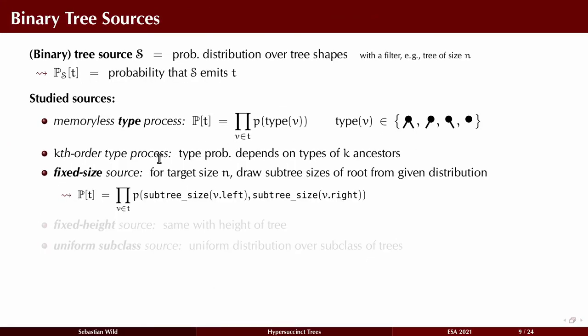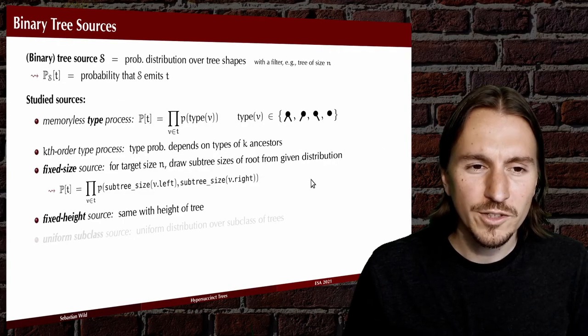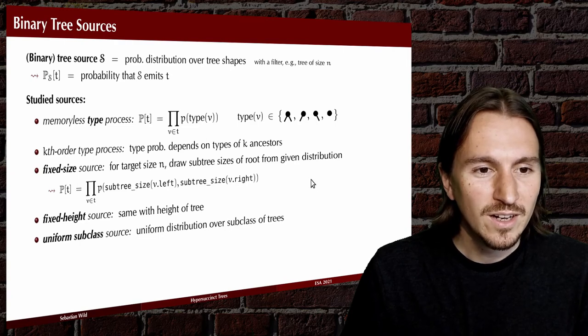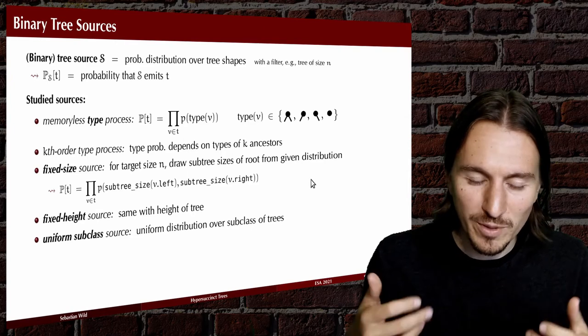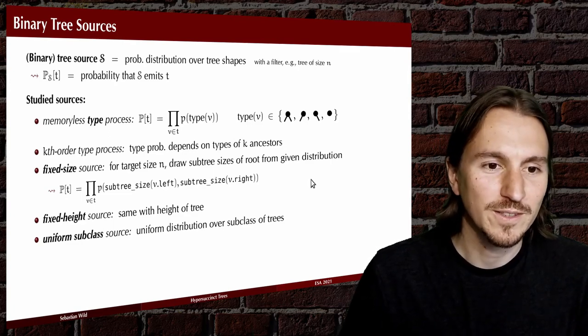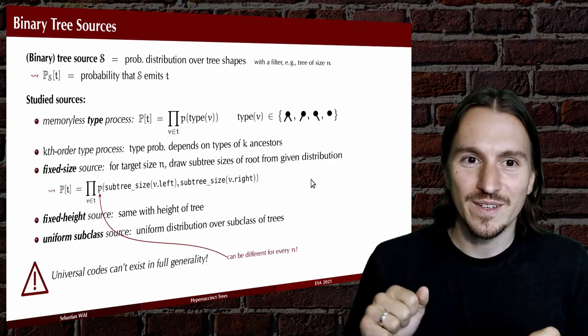A little more interesting, a little more specific for trees are the fixed size sources. Here we need a target size for the tree. We specify upfront we want exactly N nodes and then we draw how many of these N nodes that are in the subtree of a certain node we're currently looking at are in the left subtree of that node and how many of them are in the right subtree of that node. So there's for every node a contribution to the overall probability of p of the left and right sizes of that node. We can do the same using the height of subtree instead of the size. Then the height is fixed upfront, but the number of nodes is still random. And the last somewhat different class of trees is just if you specify some subclass of trees, I want a uniform tree from that subclass uniformly and random chosen from that subclass.